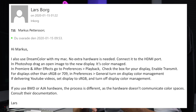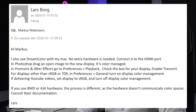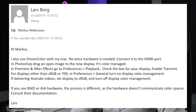I wrote Lars an email asking what the best solution was for my specific hardware setup. As it turns out, he also uses an HP Dreamcolor display with his Mac. This is what he answered: 'I also use Dreamcolor with my Mac. No extra hardware is needed — connected to the HDMI port. In Photoshop, drag an open image to the new display; it's color managed. In Premiere and After Effects, go to Preferences > Playback and check the box for your display to enable transmit. For displays other than sRGB or 709, in Preferences > General, turn on display color management. If delivering YouTube videos, set display to sRGB and turn off display color management. If you use Blackmagic Design or AJA hardware, the process is different as the hardware doesn't communicate color spaces — consult their documentation.'